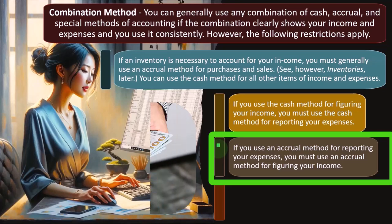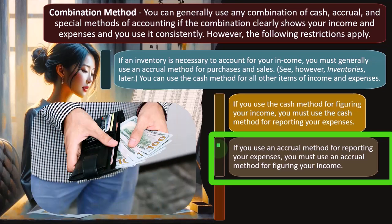Businesses are forced to go from a cash method to an accrual method because they have to track accounts receivable. On the expense side of things, they're often on the cash method because they don't have accounts payable. They're not tracking accounts payable — rather, they're just expensing their items as they become due, paying them as they become due.